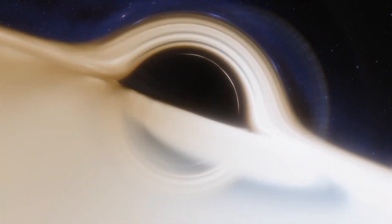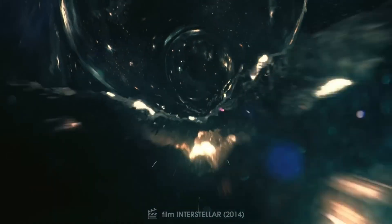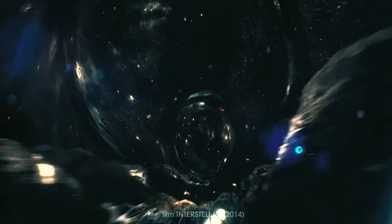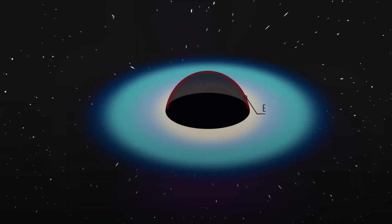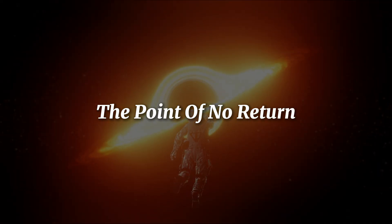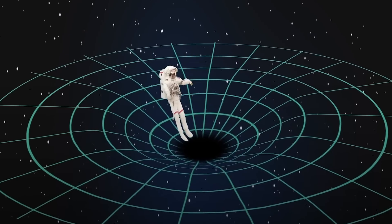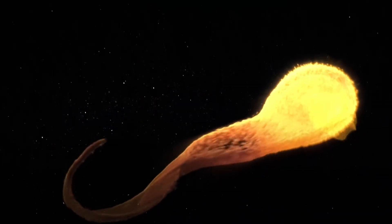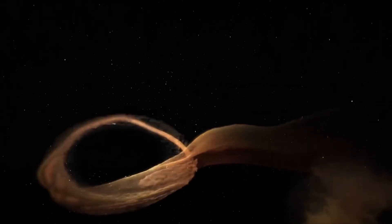The collapse is so intense that it warps the fabric of space and time itself, forming an invisible boundary called the Event Horizon. The point of no return. Cross it and you're gone forever. That moment marks the birth of a black hole.